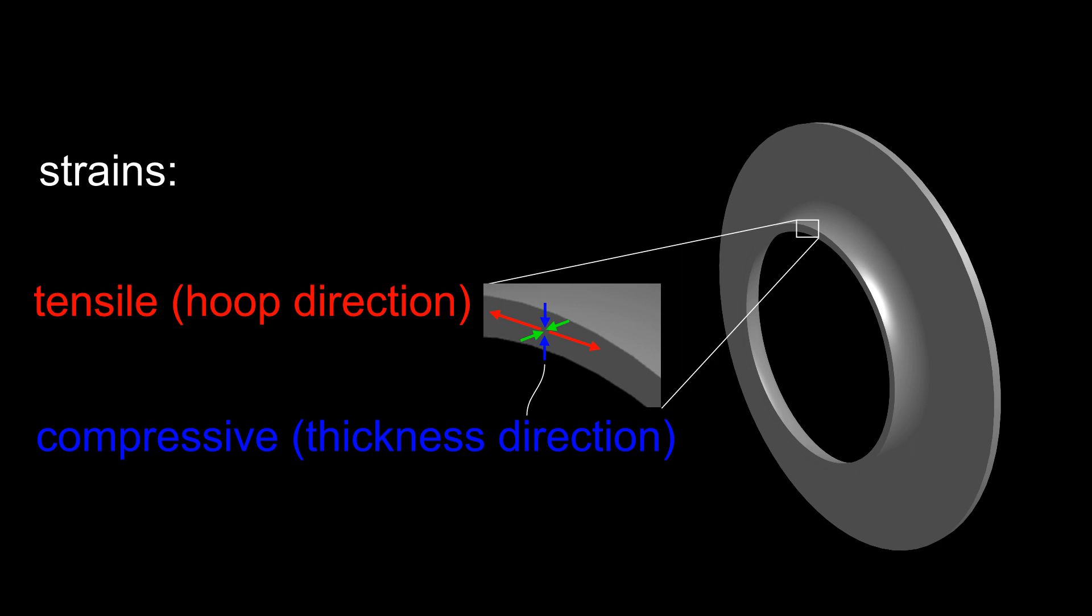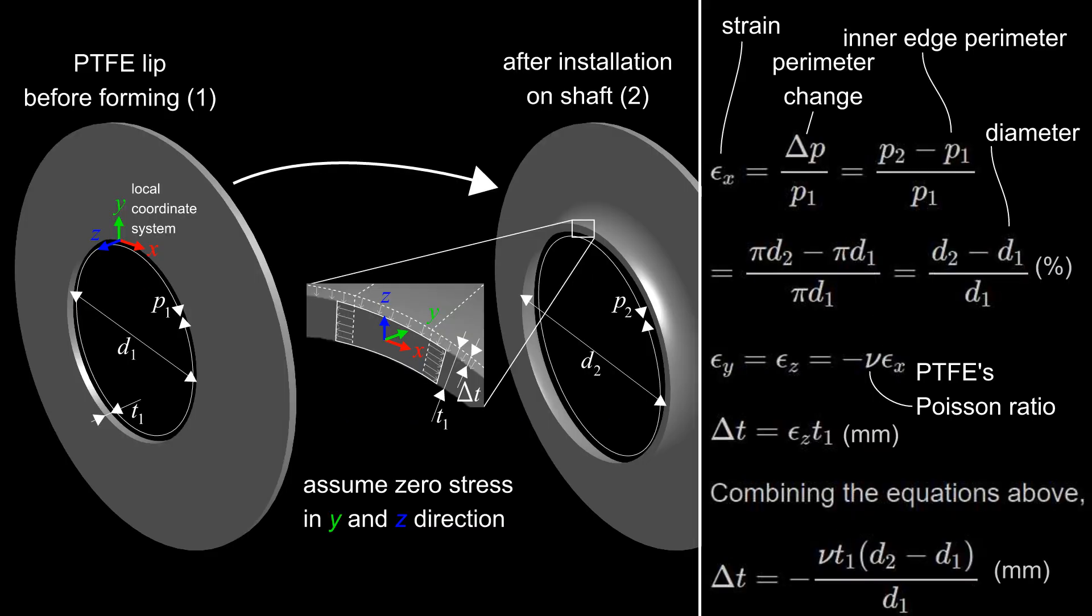After installation on a shaft, usually with a diameter larger than the mandrel, these effects become even more pronounced. An approximation of the thickness decrease due to forming and installation can be calculated by comparing the lip geometry before forming and after installation.